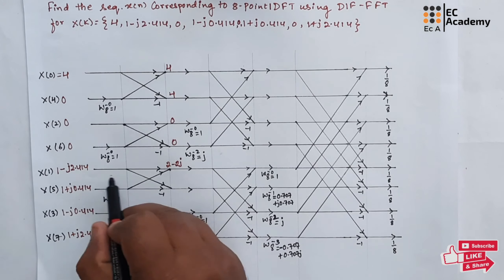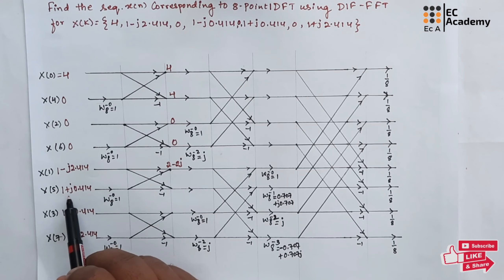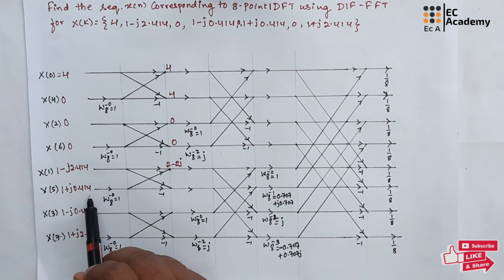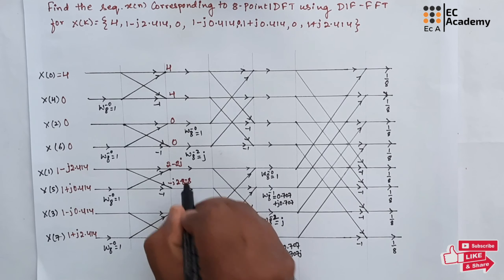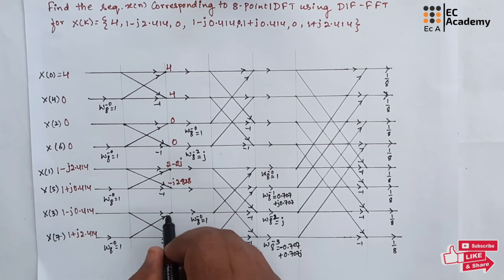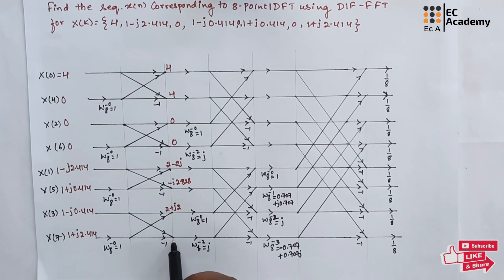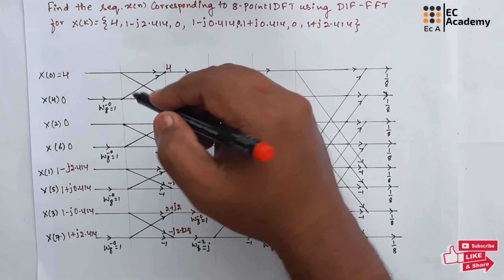Output at this point will be 1 minus j2.414 minus 1 minus j0.414, so it will be minus j2.828. Output at this point will be 2 plus j2. Output at this point will be minus j2.828. These are the intermediate results, which will be acting as the input to the next stage.